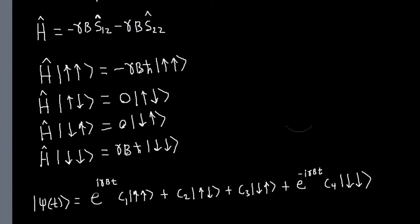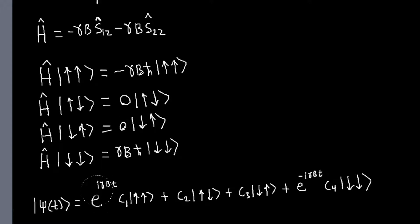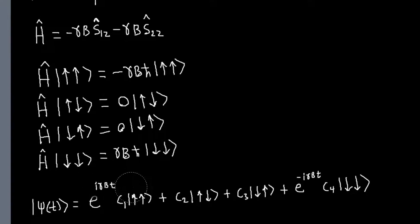And if you do that, you'll just get this. So this term, the time evolution operator is e to the minus i H t over h-bar, so each term just multiplies through, and then I replace H with the corresponding eigenvalue.